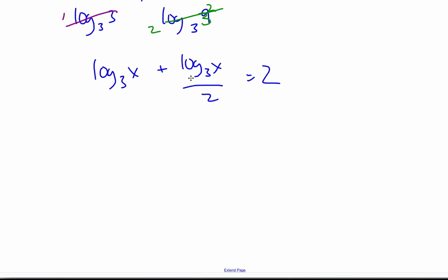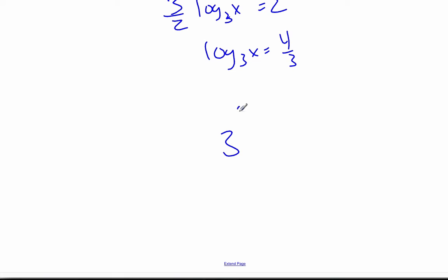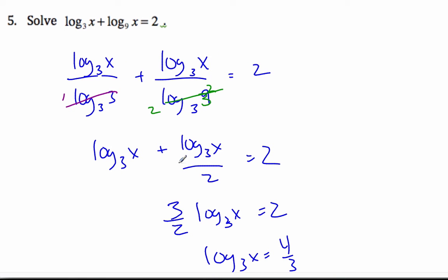I can now, it's just a matter of collecting these. So if I have 1 log plus 1 half log, that's 3 halves log base 3 of x is equal to 2. So log base 3 of x is equal to 4 over 3. Changing my forms, I can say 3 to the power of 4 thirds is equal to x.